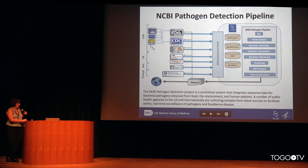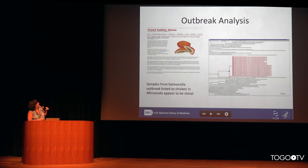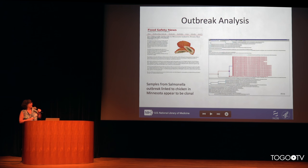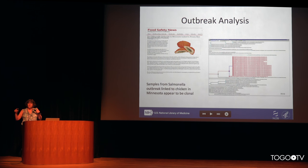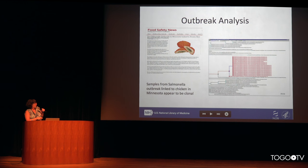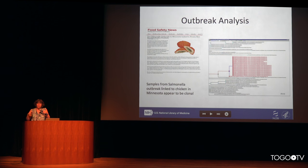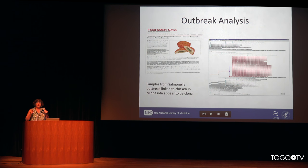We also make the reports public. Here's an example where our collaborator was the Minnesota Department of Health. They submitted samples that went through the pipeline, and the result was that these 15 or so different strains from different people were extremely closely related — the ones in red, looking at a tree of relationships, are very close to each other and far from everyone else. With that information, the Department of Health was able to go back to the individuals, interview them in more depth, find that food source, and pull it out of the food supply to prevent more people from getting sick.